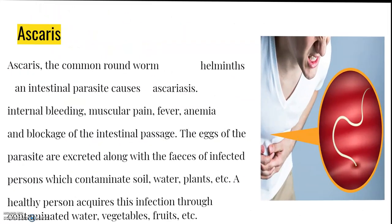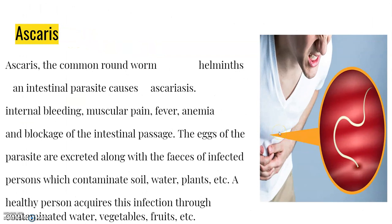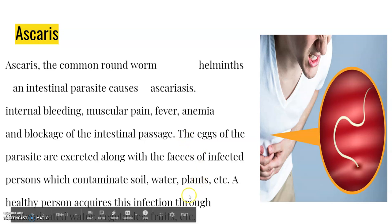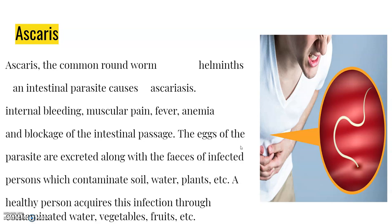Ascaris is a common roundworm belonging to the helminth category and is an intestinal parasite that causes ascariasis. Symptoms include internal bleeding, muscular pain, fever, anemia, and blockage of the intestinal passage. The eggs of this parasite are excreted through the feces of infected persons, contaminating soil, water, and plants. A healthy person acquires this infection through contaminated water, vegetables, and fruits.